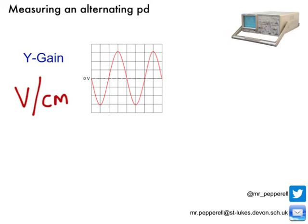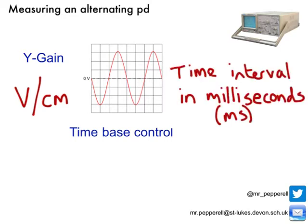I know if each square is worth a certain number of volts, I can count the squares, that tells me the peak voltage of the supply. I can set the time-based control on the bottom, which basically tells me the time interval for each square in milliseconds, so I can work out how long it takes for each wave cycle to go from one point to the start of the same point on the next wave. I can measure that in milliseconds, convert it to seconds.